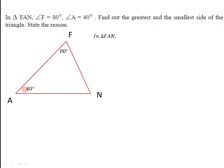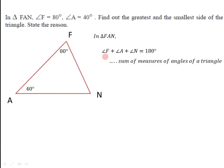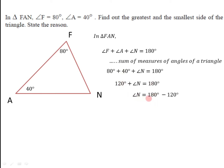In triangle FAN, angle F is 80°, angle A is 40°, and we need the measure of angle N. In triangle FAN, angle F + angle A + angle N = 180°. So 80° + 40° + angle N = 180°, giving us 120° + angle N = 180°. Therefore angle N = 60°.